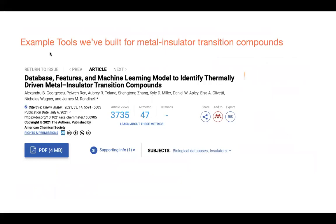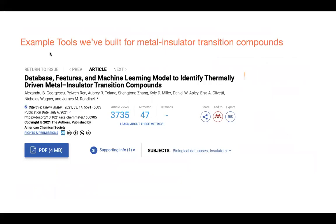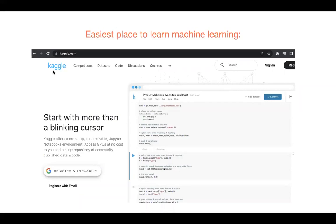We have built example tools for discovery of metal-insulator transition compounds. In one paper we provide an online database and tools running in Binder — no installation required. If you're interested in machine learning for this, I strongly recommend Kaggle, a website where everything runs in Binder; you can take data science courses and also compete in data science competitions.